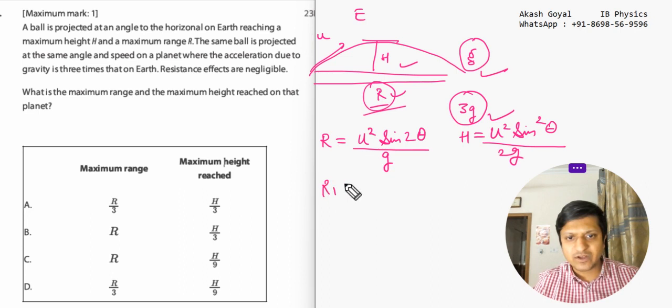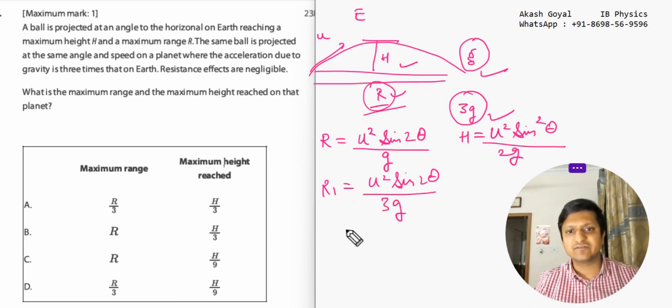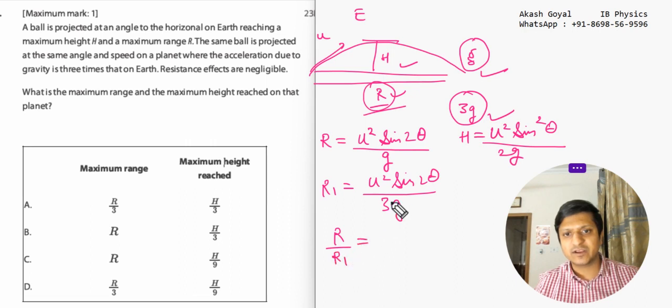So for r1, it would be u square sine 2 theta over 3g, because everything is the same but g is 3g. So when we divide r by r1, it will be 3. So r1 value will be r by 3.